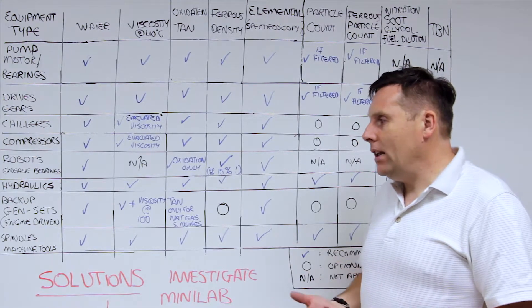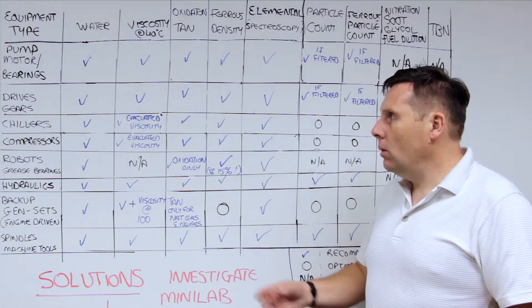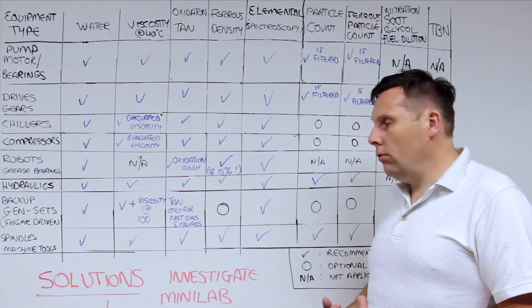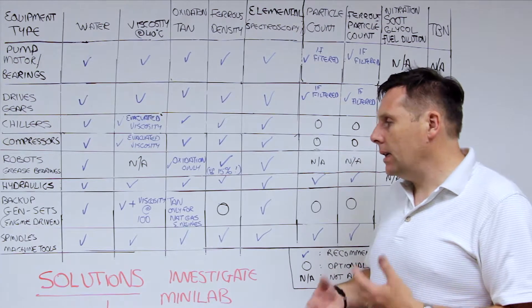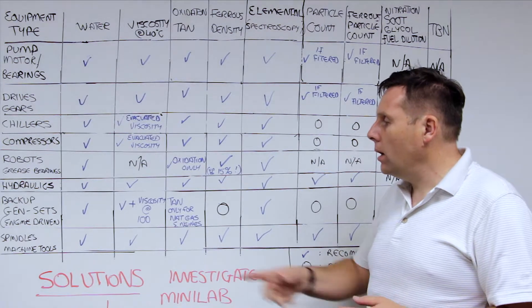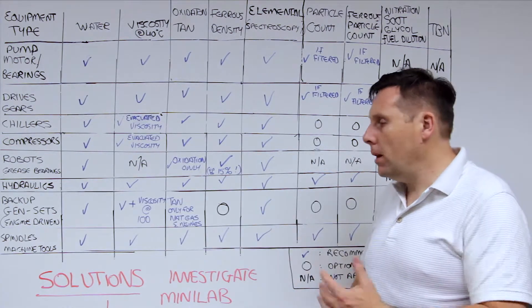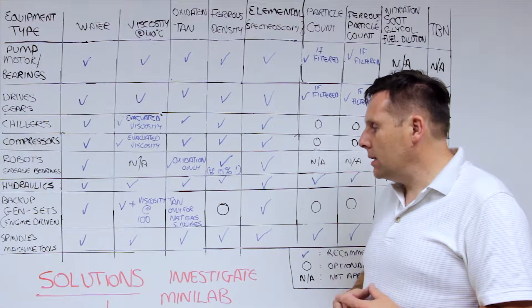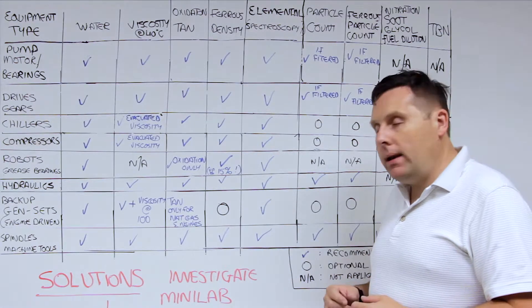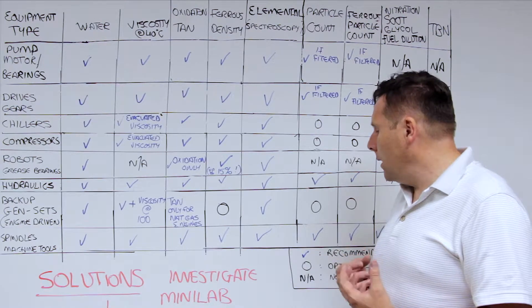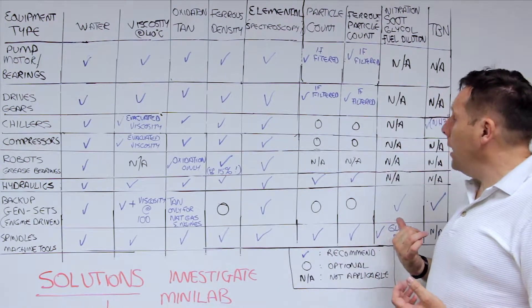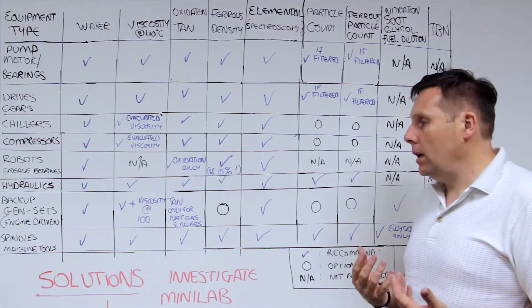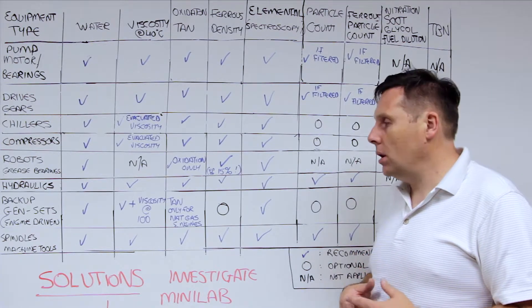Backup gensets and engine driven systems. You certainly want to look at water content. You want to look at viscosity at 40 and 100 if you have it, or a VI index to calculate out that viscosity at 100, because multi-grade oils tend to measure it on 100. TAN only if you've got a natural gas engine system. We do recommend elemental spectroscopy because of the fine wear, and also we do recommend nitration soot fuel dilution, as well as TBN on any engine set, especially on a resip system.